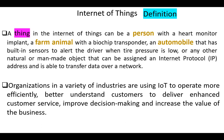In brief, the Internet of Things are connected objects and devices that are equipped with sensors, software and other technologies that allow them to transmit and receive data to and from other things. For today, that's all. Thank you.